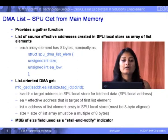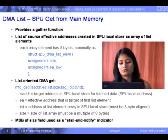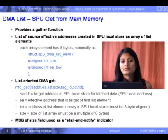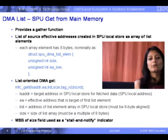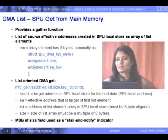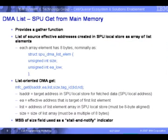The command to start this kind of DMA operation is MFC_get_L. So instead of MFC_get, we use MFC_get_list. You have to specify the beginning local store address, then the effective address, then the list — the whole list you've created — and the size, the tag ID, and the group ID.